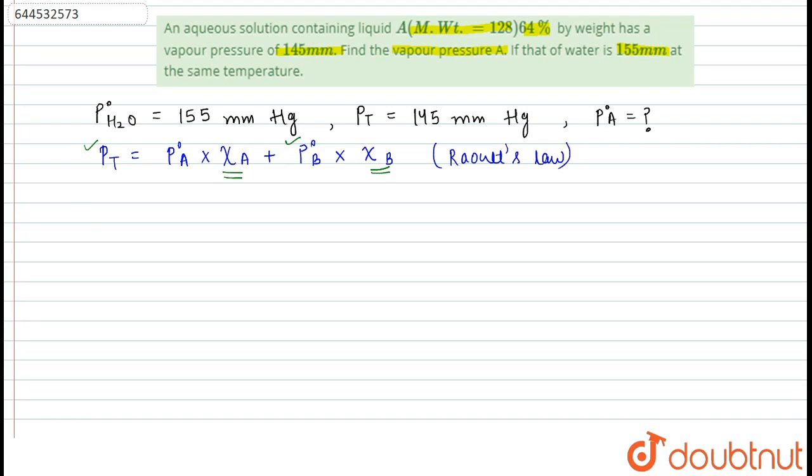P total is given, P0B is given. Chi A and chi B need to be calculated. So, we will calculate chi A and chi B.